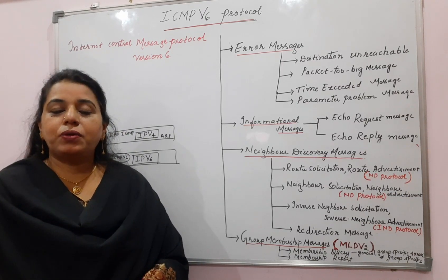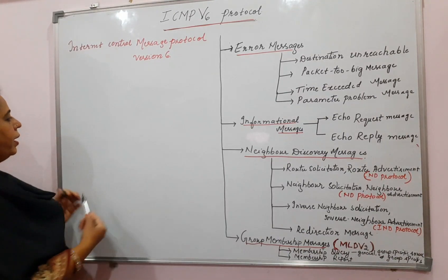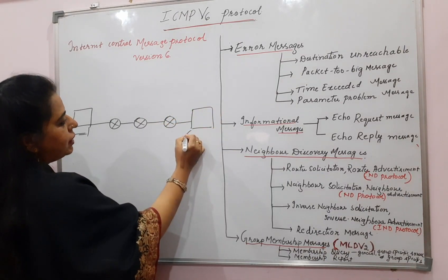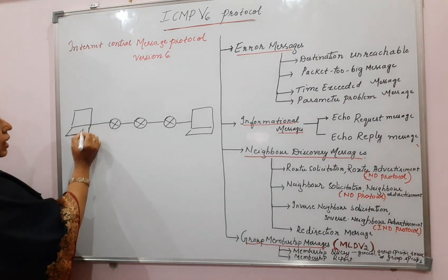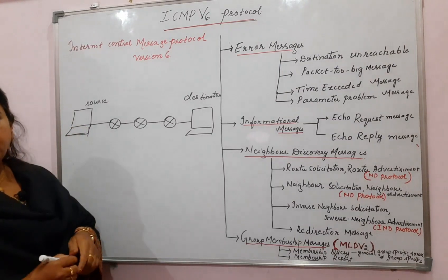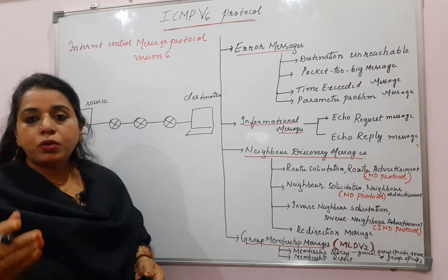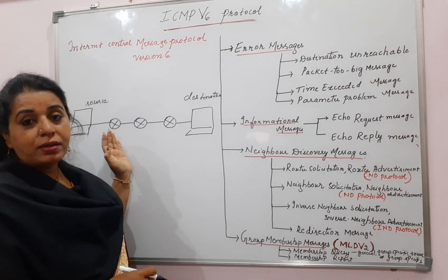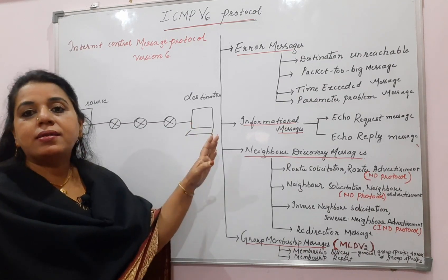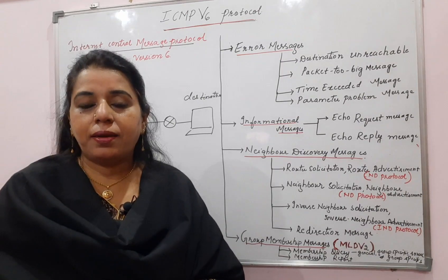The functionality of ICMPv6 is the same as ICMPv4 - error messages have to get reported to the source host. Consider a network scenario where this is the source host, with a few networks connected by routers in between, and the destination host. If a packet starts from the source host and tries to reach the destination host via networks, there can be errors, and these errors have to get reported to the source host. That is the functionality of the ICMP protocol.